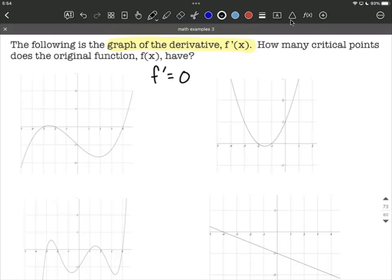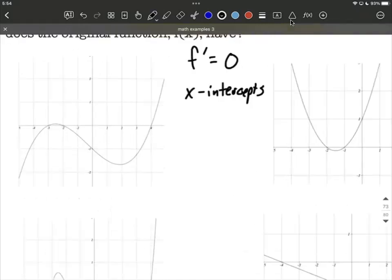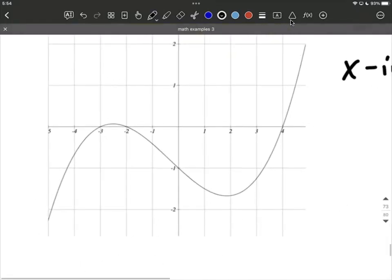So in our case, because we have graphs in front of us, we want to figure out when is the derivative equal to zero. Well, what that boils down to in all of our cases is when the derivative equals zero, when our graph equals zero, that's when we get a y value of zero, or we're thinking about x-intercepts. So, basically counting up these x-intercepts as we go through these.